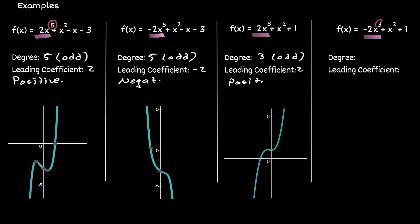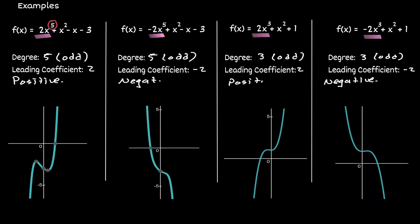In the last polynomial, the degree is three, which is odd, and the leading coefficient is negative two, which is negative. Let's graph this function. Notice that now the end behaviors are not the same as before — they're not both facing up or both facing down. They always go in a different direction. In our first polynomial, as we go to the left we are decreasing, and as we go to the right we are increasing. In our second polynomial, as we go to the left we are increasing, and as we go to the right we are decreasing.